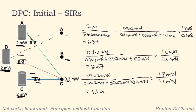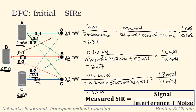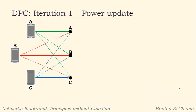To summarize: the measured SIR equals the signal over the interference plus the noise — that's what we use to compute these initial SIRs. Now we move on to the first iteration and perform the power update given those SIR values.